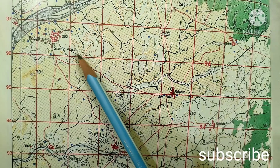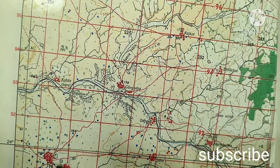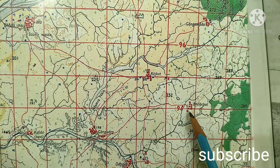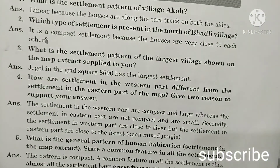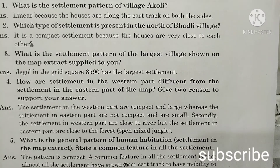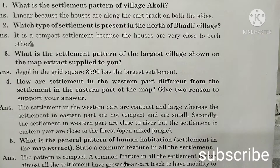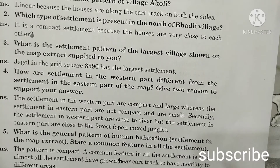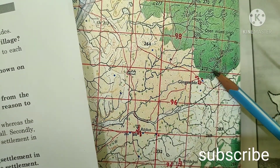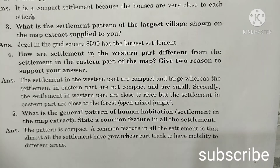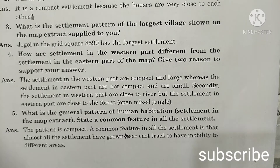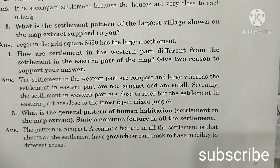The western part has compact settlements — villages are very close to each other. In the eastern side, small villages are present and they are very close to the forest area. The settlement in the western part are compact and large, whereas in the eastern part they are not compact and are small. Secondly, settlements in the western part are close to the river, but settlements in the eastern part are close to the forest — open mixed jungle. Fifth question: What is the general pattern of human habitation in the map extract? The pattern is compact. A common feature in all settlements is that almost all have grown near a car track to have mobility and good transport.